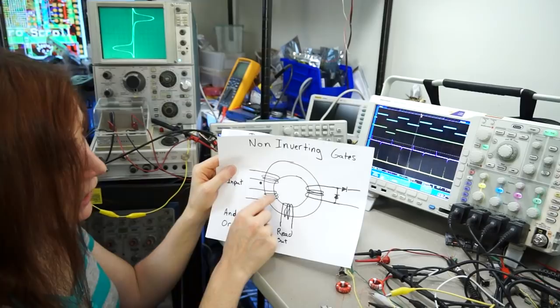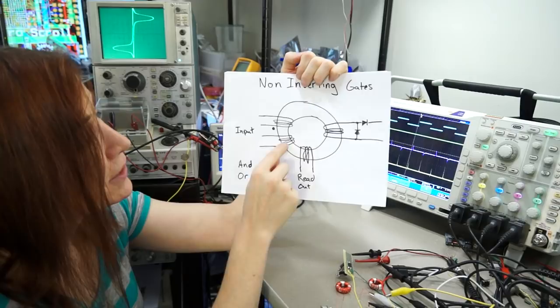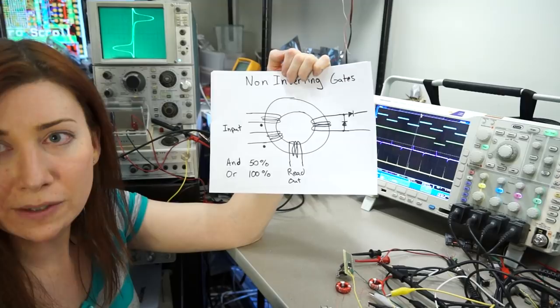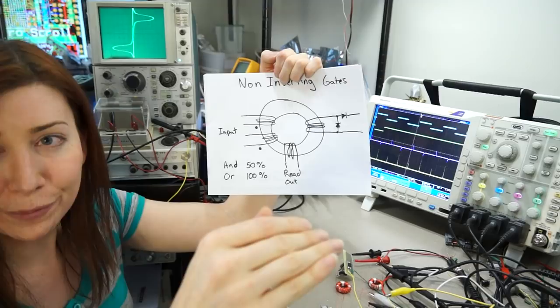Alright, so if you want to make non-inverting gates, you can add extra windings to the coils. For instance, to make an AND gate, you would wind the coils in such a way that incoming pulses would only reach 50% of the hysteresis point. So, to do an AND function, you'd have to have both of these energized to the point, and have enough current flowing through them that you would hit that hysteresis point, and then you would be able to flip the state of this ferrite.